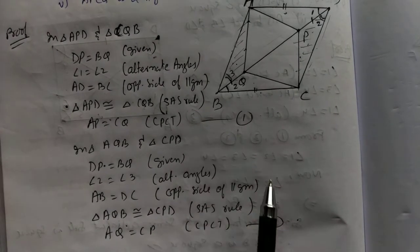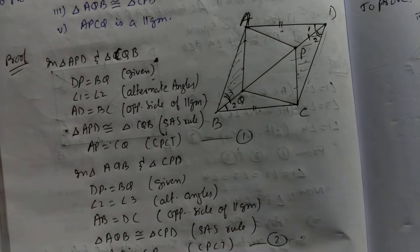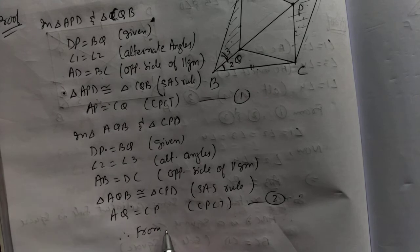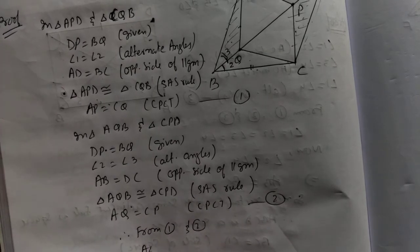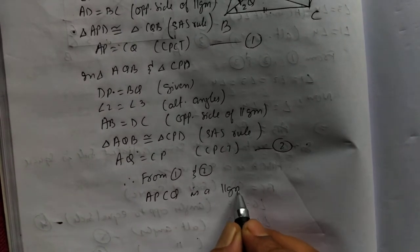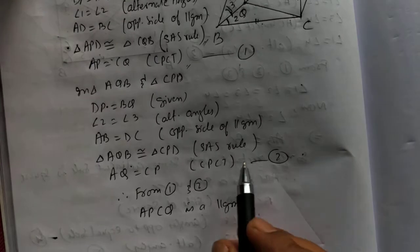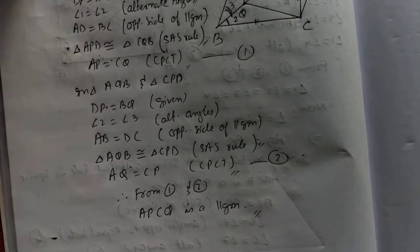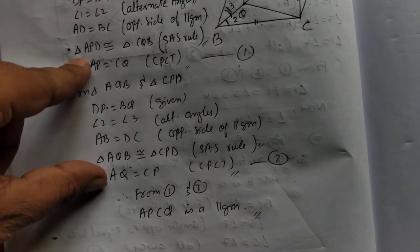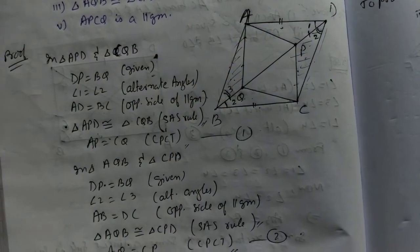Now if you see step 1 and step 2, we are getting that AP equal to CQ and AQ equal to CP. If pair of opposite sides are same, that means this is a parallelogram. Therefore, from 1 and 2, we can say APCQ is a parallelogram. So we have proved all five parts. The fifth we are getting from 1 and 2 — if the pair of opposite sides are same, then the figure must be a parallelogram. Pause the video to write the proof.